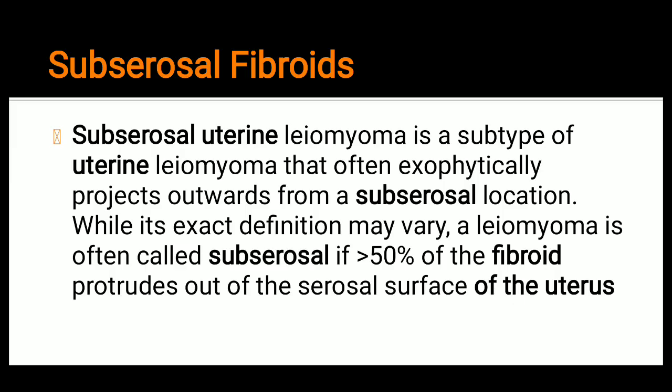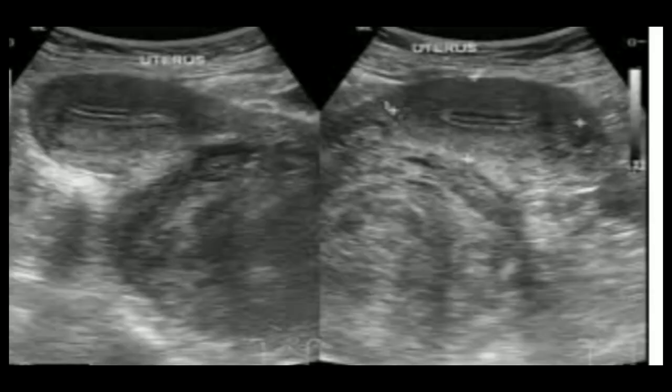Submucosal uterine leiomyoma is a type of uterine leiomyoma that often exophytically projects outward from a submucosal location. While its exact definition may vary, a leiomyoma is often called submucosal if more than 50% of the fibroid protrudes out of the serous surface of the uterus. In this ultrasound picture, you can see the submucosal fibroids which protrude out of the serous surface of the uterus.